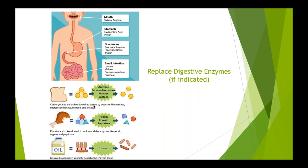Other things that naturally increase digestive enzymes: ginger tea is a great prokinetic — it helps move food through the stomach and increases stomach acid, so sipping it before meals is beneficial. Foods that are bitter — like arugula and dandelion greens — stimulate the production of more digestive enzymes. Also, try not to drink large amounts of water with meals, because increasing fluid can dilute stomach acid and decrease digestive enzyme activity.